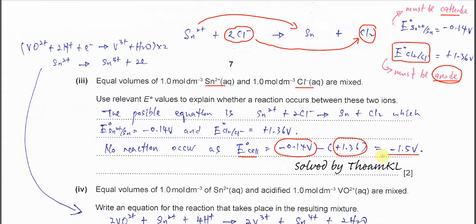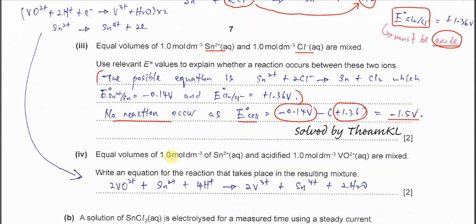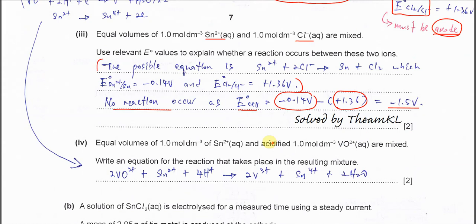E0 cell is negative 1.5 volts, so therefore no reaction takes place — it will not happen. Whenever E0 cell is negative, there is no reaction. So the possible equation must be as described: Sn2+/Sn as cathode and the chlorine/chloride as anode. Substituting into E0 cell gives negative 1.5, confirming no reaction.